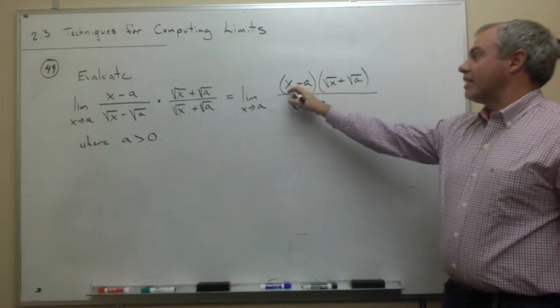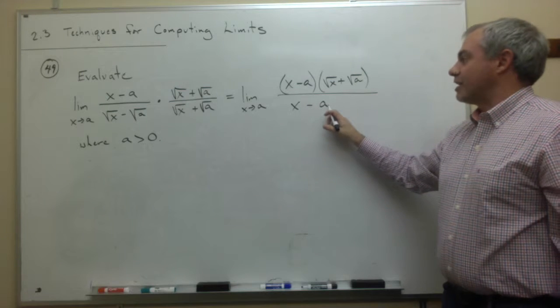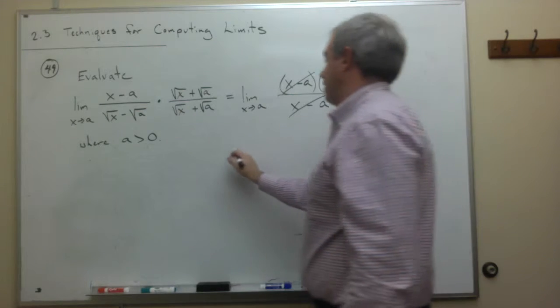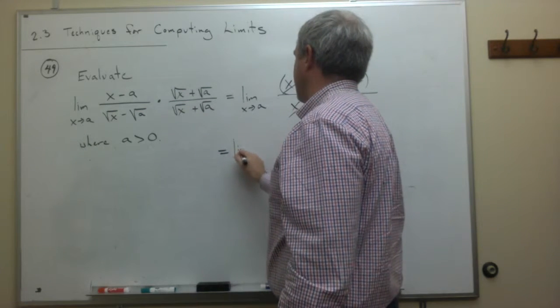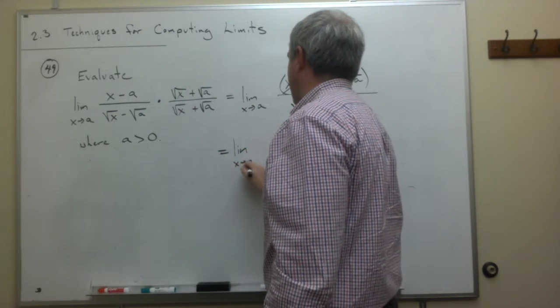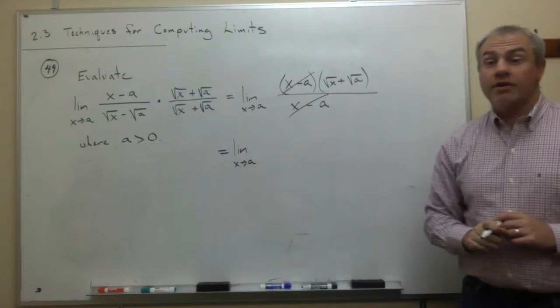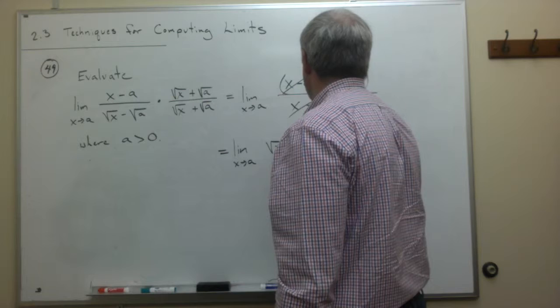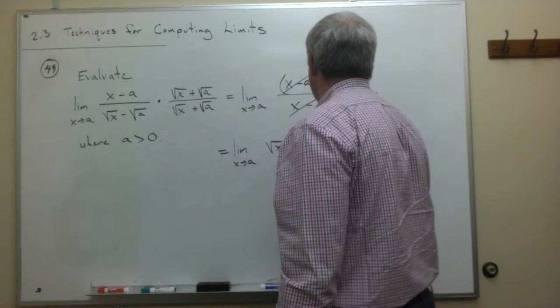We see here I have an x minus a on top, I have an x minus a on bottom, so those factors cancel. And what I'm left with is I have the limit as x goes to a of a square root of x plus the square root of a.